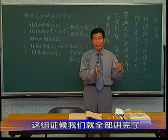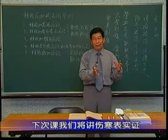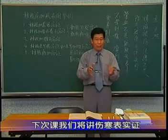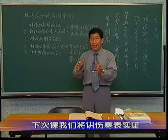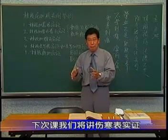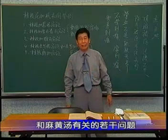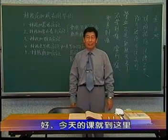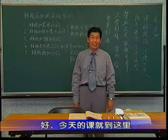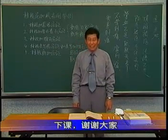所以太阳病的表证有两大类，一类中风，一类伤寒。中风以桂枝汤为主方，由桂枝汤引出了桂枝汤的其他适应证、桂枝汤的使用禁忌证、桂枝汤的加减应用举例，所以这组证候我们就全部讲完了。下次课我们将讲太阳伤寒表证和麻黄汤有关的若干问题。好，今天的课就到这，下课谢谢大家。